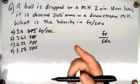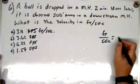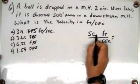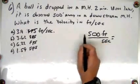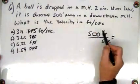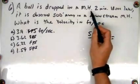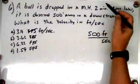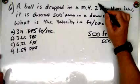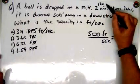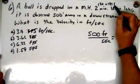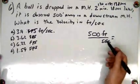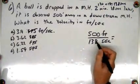The feet are already given — it's 500 feet. Then for the seconds, we're going to simplify 2 minutes and 18 seconds. 2 minutes is 120 seconds, plus 18 equals 138 seconds.